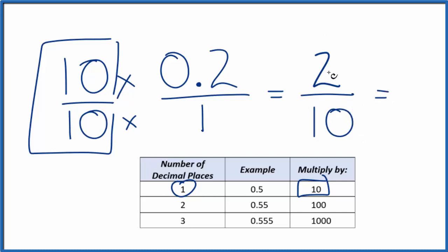We could simplify this, divide the top by 2, that would give us 1, divide the bottom by 2, that gives us 5, and 0.2 is equal to the fraction 1 fifth.